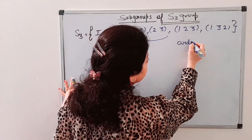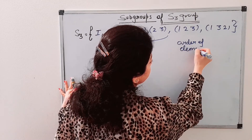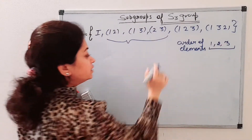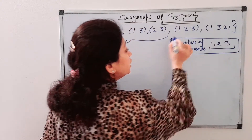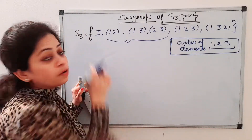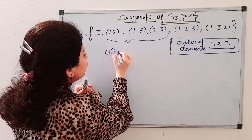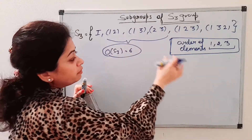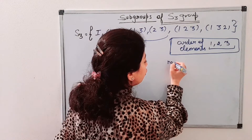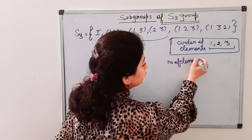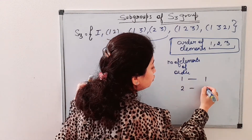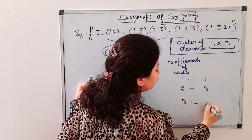Now we recall the order of elements. The order of elements can be one, two, or three. According to Lagrange's theorem, order of element must divide the order of the group. The order of S3 is six, so order of element can be one, two, or three — it cannot be six because S3 is a non-cyclic group. There is one element of order one, three elements of order two, and two elements of order three.